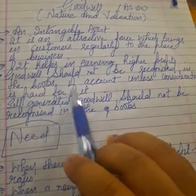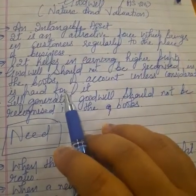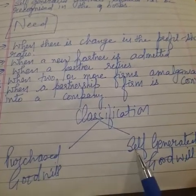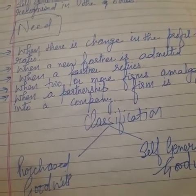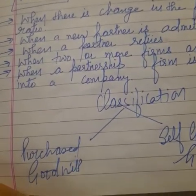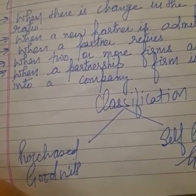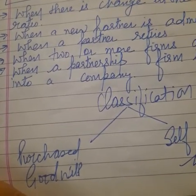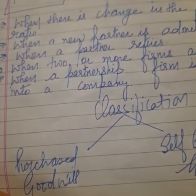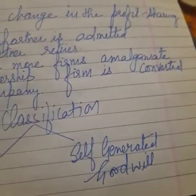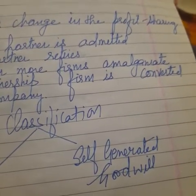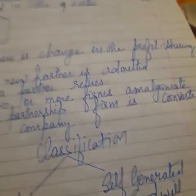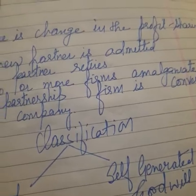Goodwill should not be recognized in the books of accounts unless consideration is paid for it. There are basically two types of goodwill: purchased goodwill and self-generated goodwill. Purchased goodwill means, for example, if you have taken over an existing business, you have purchased the goodwill already created by that business. Self-generated goodwill is generated by providing good services, good quality products, and affordable prices.